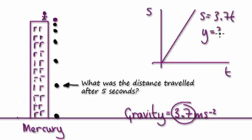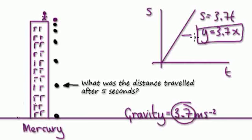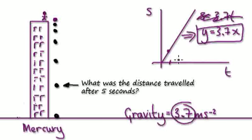Actually I'm going to use it as y equals 3.7x — it's up to you what you use. You want to know the distance traveled after 5 seconds. So 1 second is here, 2 will be here, 3 will be here, 4 will be here. After 5 seconds, what is the height here?